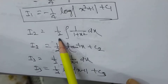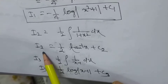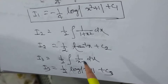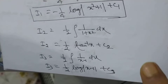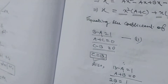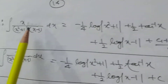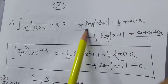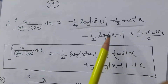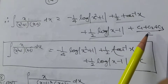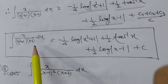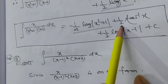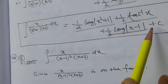Similarly, i₂ = ½ ∫1/(1 + x²) dx = ½ tan⁻¹x + c₂. And i₃ = ½ ∫1/(x - 1) dx = ½ log|x - 1| + c₃. So finally, ∫x/[(x² + 1)(x - 1)] dx = -1/4 log(x² + 1) + ½ tan⁻¹x + ½ log|x - 1| + c, where c₁ + c₂ + c₃ = c.